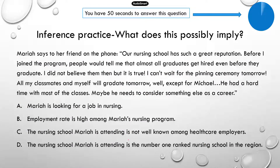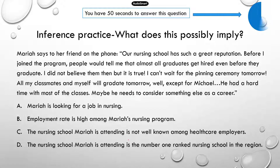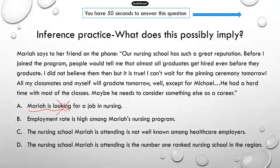Next question — you have 15 seconds. For this question, since you've already read the paragraph, you only need a little bit of time to answer. Option A, "Mariah is looking for a job in nursing" — that's not true, because she implied that most of her classmates and herself had already gotten a job; they got hired even before they graduate tomorrow. Option B, "The employment rate is high among Mariah's nursing program" — that's true, and that's the correct answer.